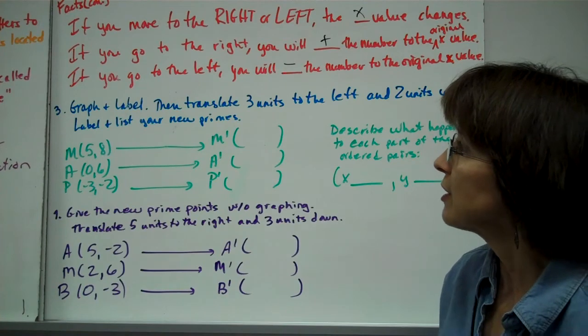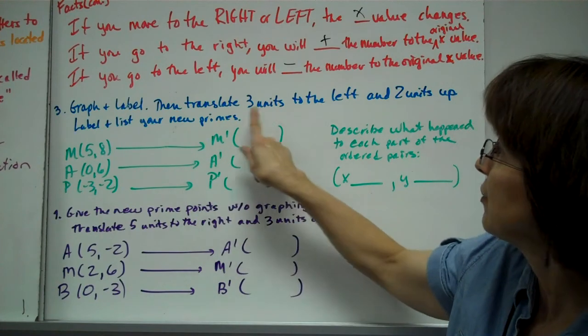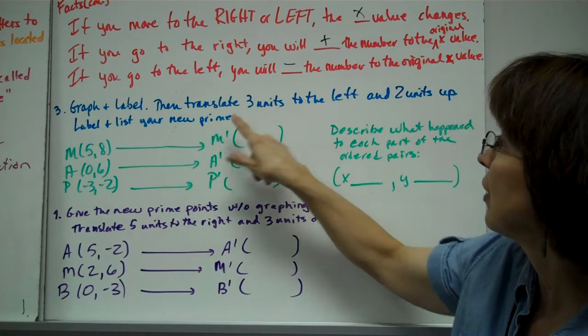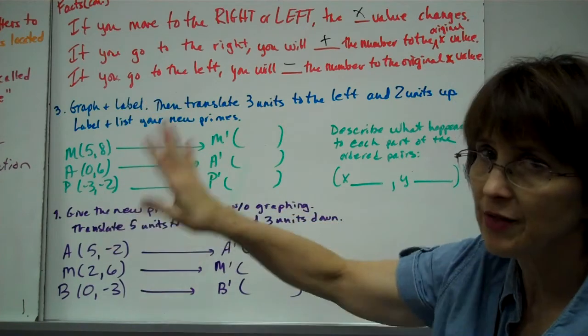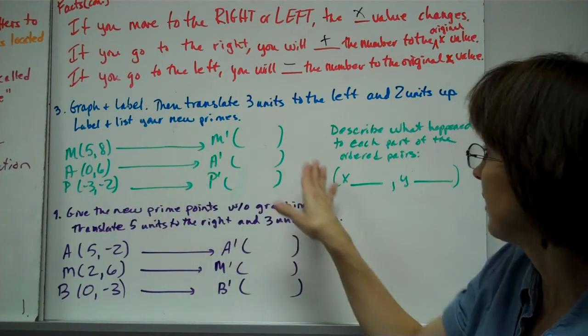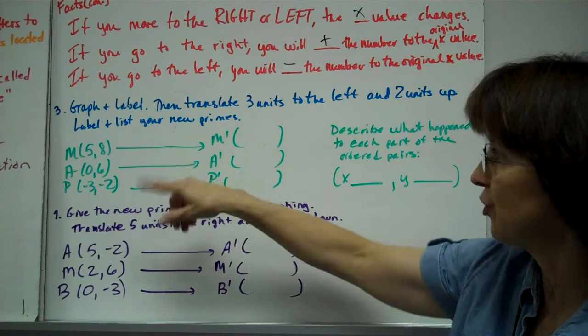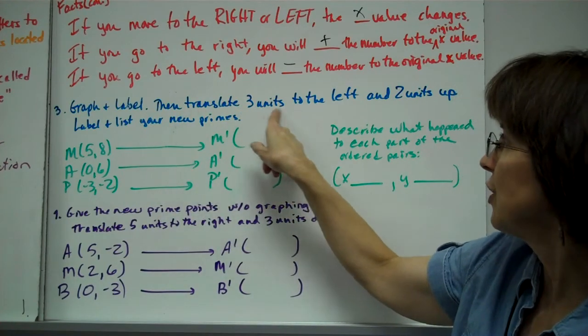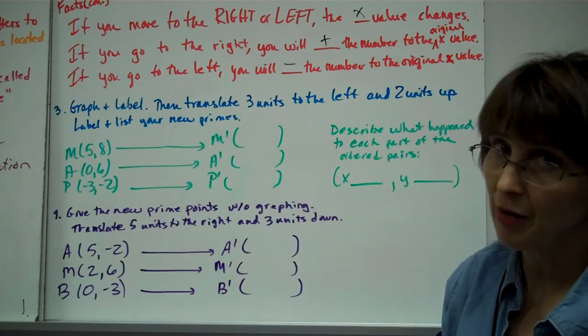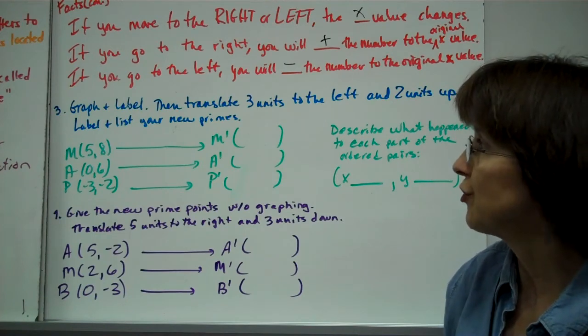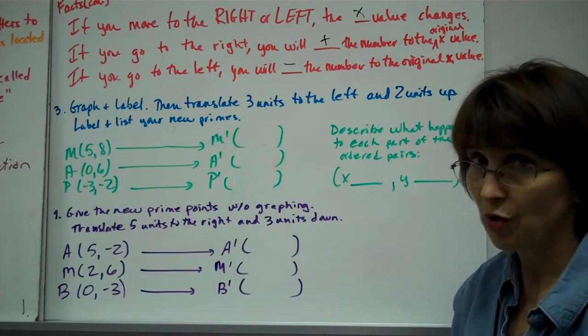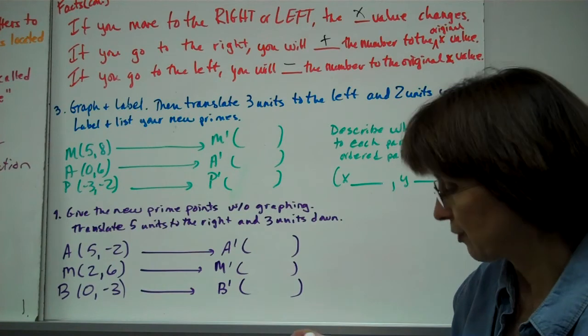Number three: graph and label these points, which I didn't graph because it would probably be inaccurate anyway. So I want you to go ahead and graph it on your paper, but graph and label, then translate it three units to the left and two units up. Then you label and list your new primes.